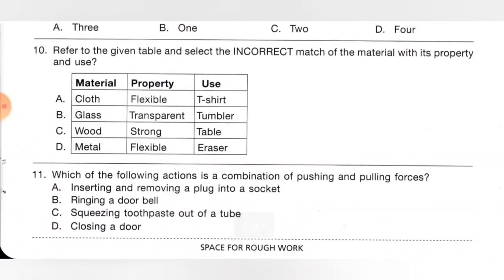Tenth one: refer to the given table and select the incorrect match of material with its property and use. A: cloth, flexible, T-shirt — correct. B: glass, transparent, tumbler — correct. C: wood, strong, table — correct. D: metal, flexible, eraser — incorrect, because eraser is flexible but it is not made from metal. So option D is the incorrect match.